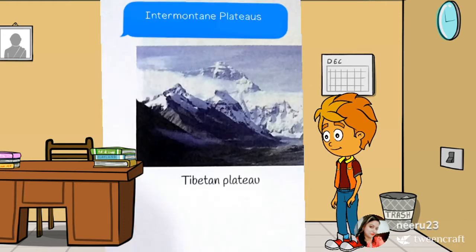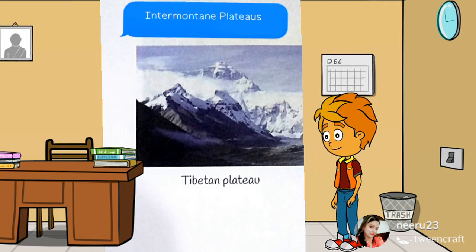Intermountain Plateaus: The plateaus which are bordered by mountains from all sides are called intermountain plateaus. Example: the Tibetan Plateau. It is the highest plateau in the world and is also called the roof of the world.